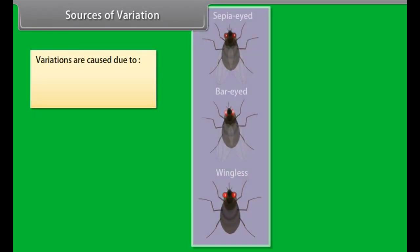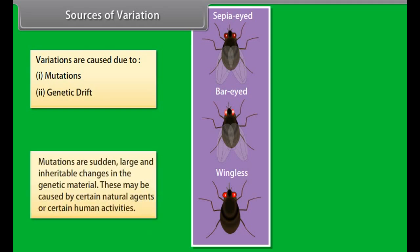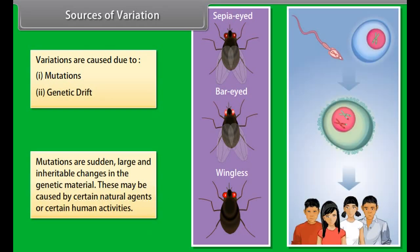Germinal variations are found in the gene pool of an organism. They may already be present in the ancestors or may occur at any time. These variations are heritable and form the raw materials for evolution.